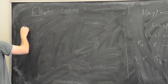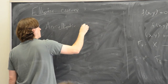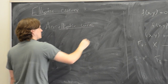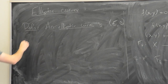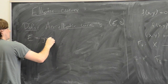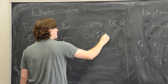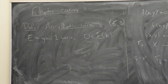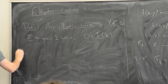So the definition: an elliptic curve is a pair (E, O) where E is a genus-one curve and O is a k-point of E. In the future I'll just write E for an elliptic curve, with O implied. The first thing to say about elliptic curves is that they're groups — there's a group law on the elliptic curve.